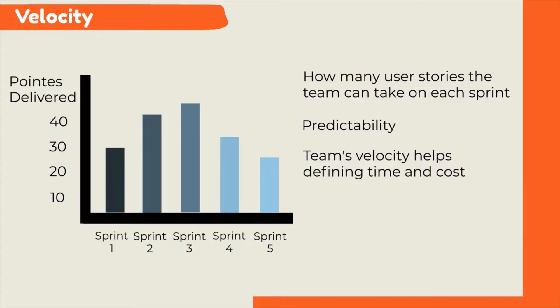Another advantage about user story points and tracking velocity is the way they account for the difference between an ideal eight-hour workday and the interrupted, meeting-filled day. Team velocity represents the team's capacity with all the messy details of real work.